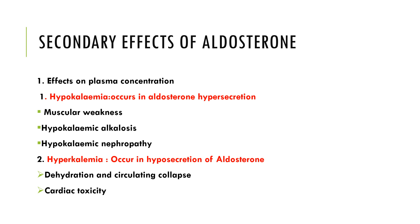Muscular weakness in hypokalemia is due to decreased excitability of nerves and muscles, as potassium is very important for action potential generation and muscle contraction. Hypokalemic alkalosis may occur due to associated increased bicarbonate reabsorption from metabolic alkalosis; free ionized calcium may be decreased, leading to tetany. Hypokalemic nephropathy may occur in prolonged hyperaldosteronism, producing polyuria, polydipsia, and disturbance in the concentrating ability of the kidney.